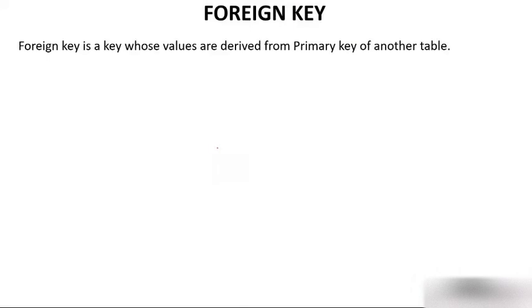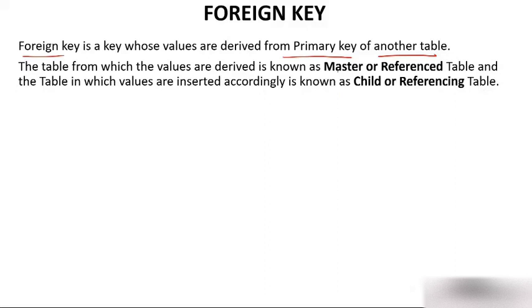The definition says a foreign key is a key whose values are derived from the primary key of another table. This means this table is dependent on another table. In the case of a foreign key, we always talk of at least two tables. The table from which values are derived is known as the master or referenced table, and the table in which values are inserted accordingly is known as the child table.